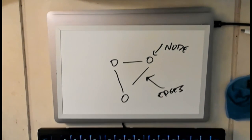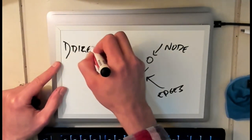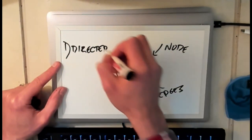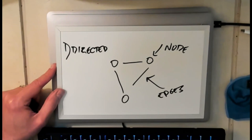There are two different properties that are independent from each other that give rise to four different types of graph. The first property is directed. So do the edges have a direction or not? Currently the edges do not have a direction and actually both of these properties are properties of the edges.